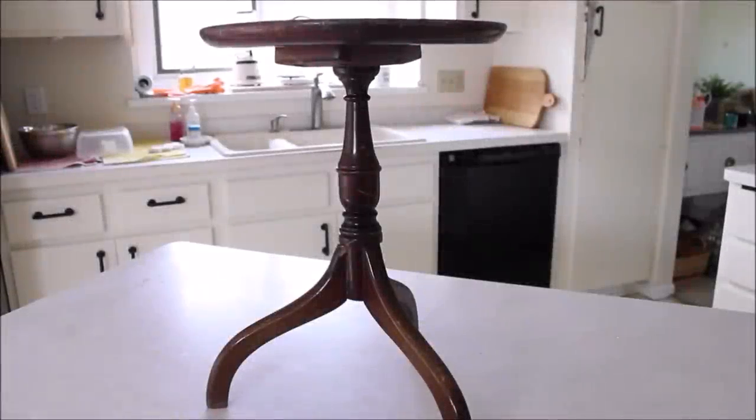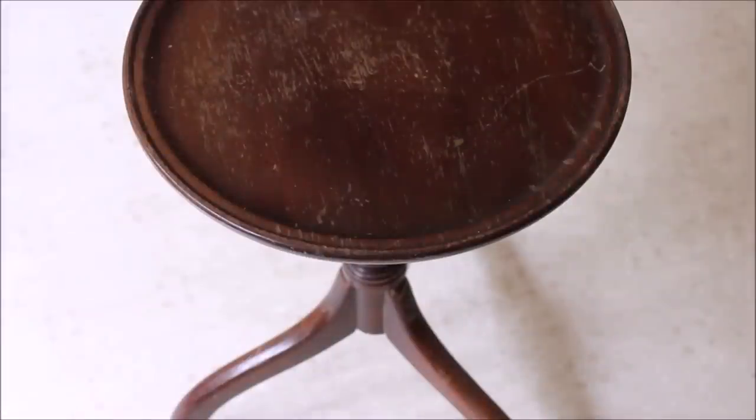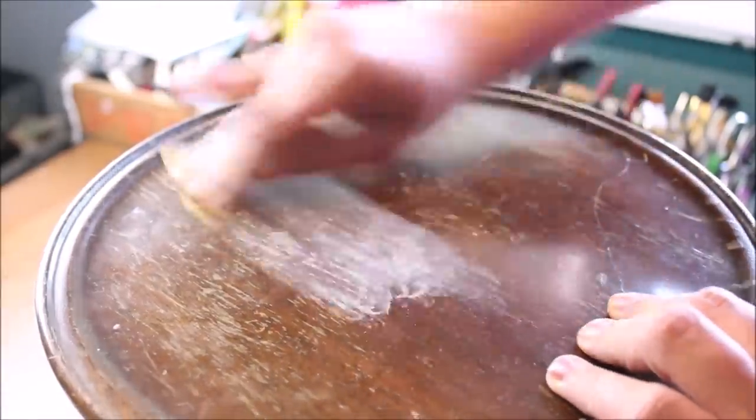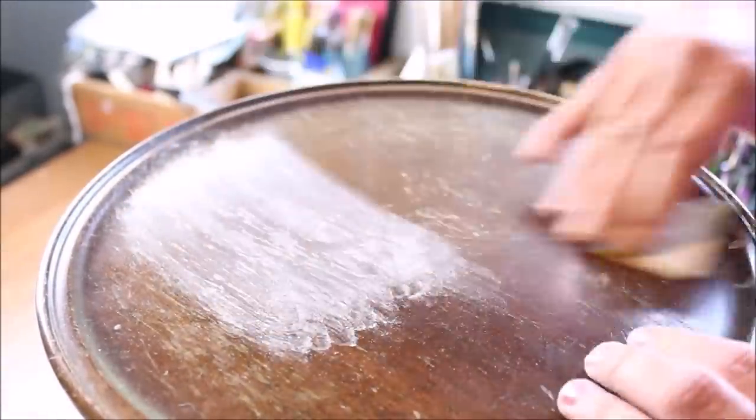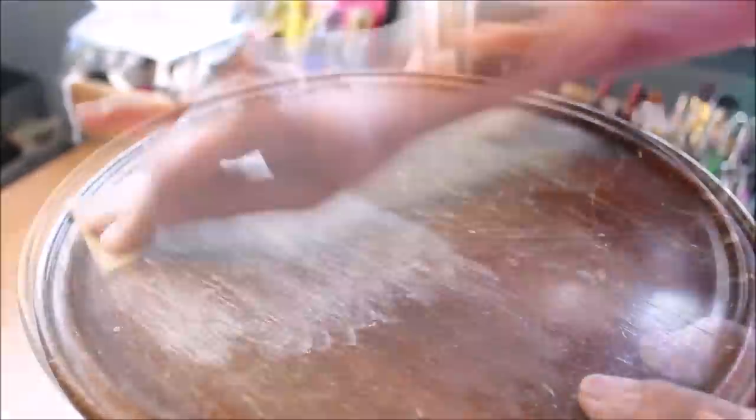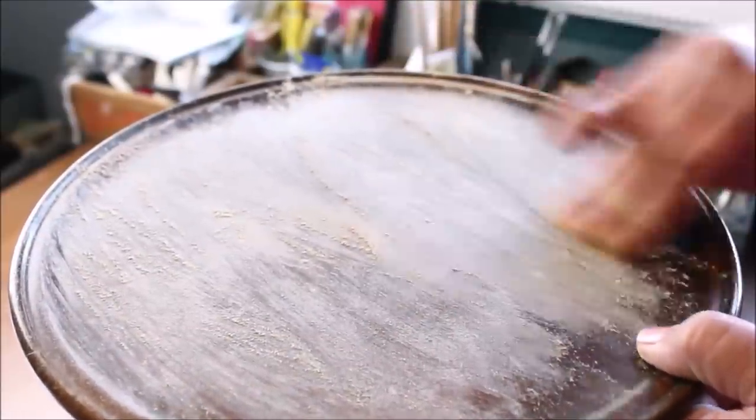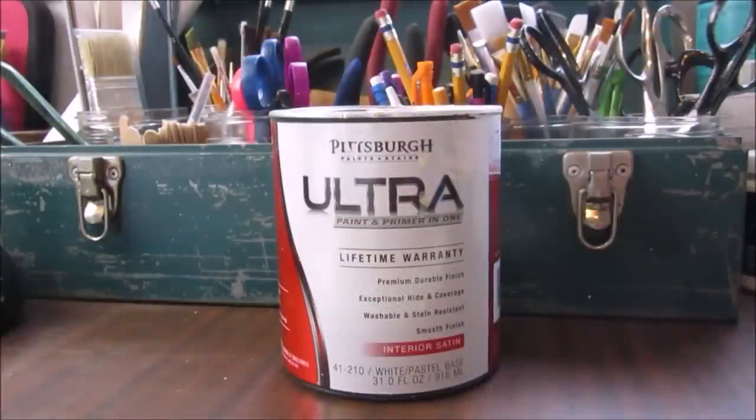The third project is this little table I recently found. I plan to use it as a plant stand, but first it needs a little spruce up. The table top itself was looking a little rough, so I used some sandpaper to smooth out the scratches and imperfections. When that was done, it was time to paint.